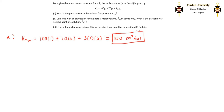For part B, it says come up with an expression for the partial molar volume of species A in terms of YB, and it asks what is the partial molar volume at infinite dilution. To find an expression for the partial molar volume of species A, I'm going to use the definition of partial molar volume, which is the partial derivative of volume with respect to moles of A at constant temperature, pressure, and moles of B.